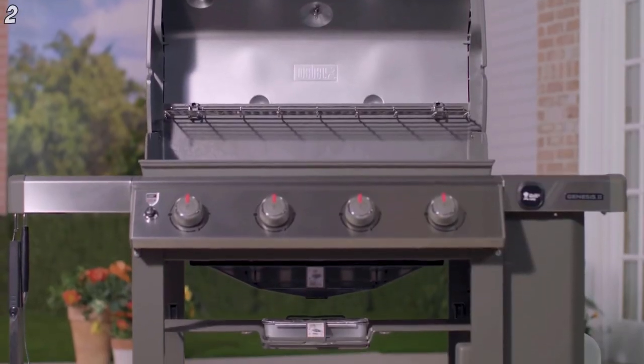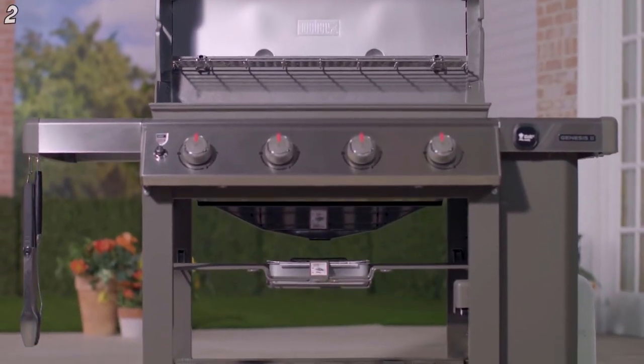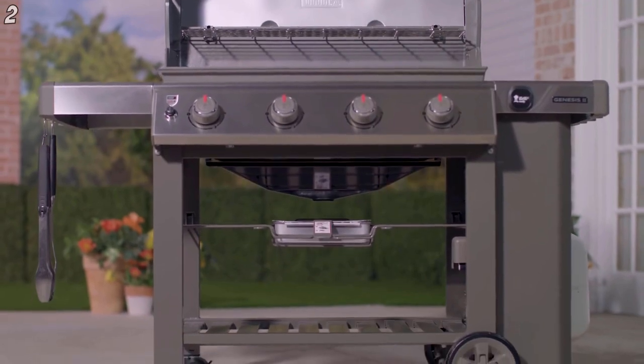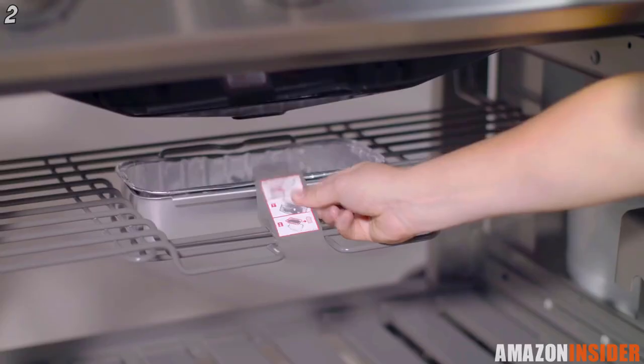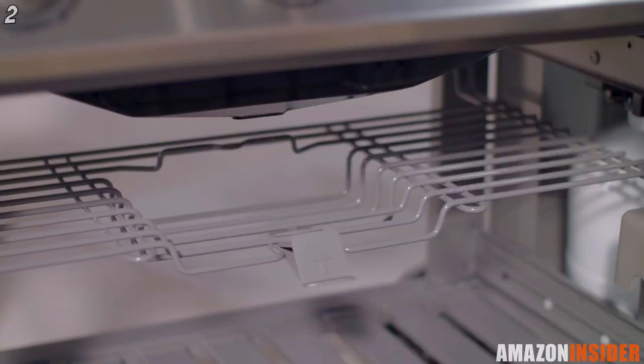The grease management system has been moved to the middle of the grill, allowing grease to escape faster. Drippings that are not vaporized by the Flavorizer Bars are funneled away from the burners into the removable drip pin.